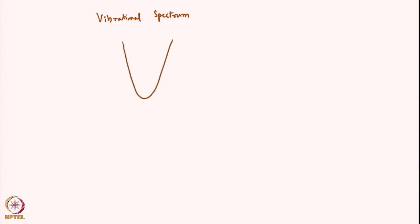In your vibration spectrum, one uses the harmonic oscillator because at the bottom of the potential, one can always approximate it as a harmonic oscillator and the wave function will look accordingly. The force constant k is given by the second derivative of the potential with respect to r, evaluated at the equilibrium distance r0. So this is the second derivative of the potential evaluated at the equilibrium geometry, and the bottom of the well can always be considered as a harmonic potential.